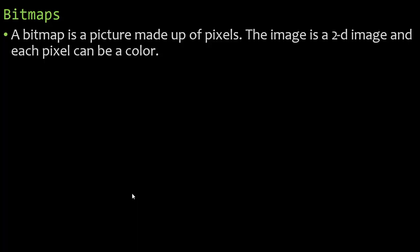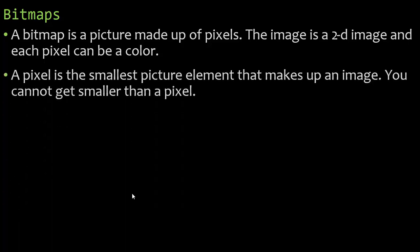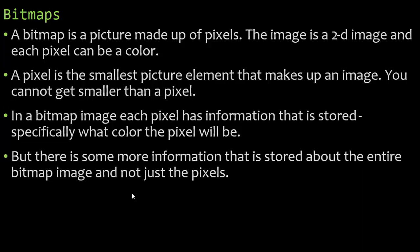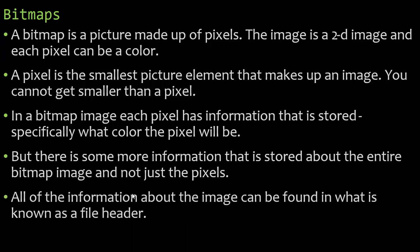Let's talk about bitmaps. A bitmap is a picture made up of pixels. It is a map of bits and the image is a 2D image where each pixel can be a color. A pixel is the smallest picture element that makes up an image — you cannot get smaller than a pixel. In a bitmap image, each pixel has information stored specifically about what color the pixel will be, so the bits decide what color the pixel will be. There is also more information stored about the entire bitmap image, and all that information — such as the image resolution — can be found in what is known as a file header. The file header is never seen by the user.